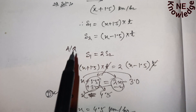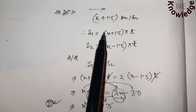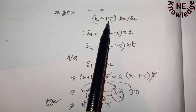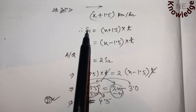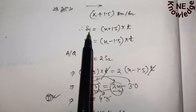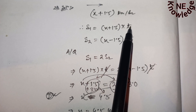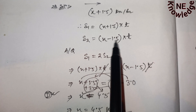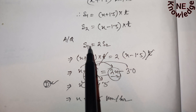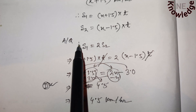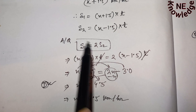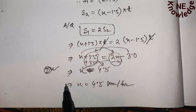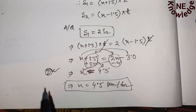Confirming: the stream speed is 1.5 km per hour. S1 = (x + 1.5) × t and S2 = (x − 1.5) × t. Since S1 = 2 × S2, solving gives the speed of the man as 4.5 km per hour. Option D is the correct answer.